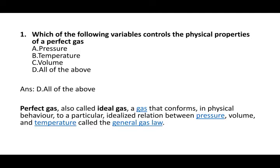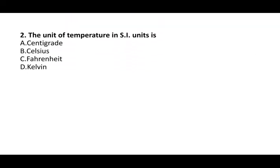A perfect gas is also called an ideal gas — a gas that conforms in physical behavior to a particular idealized relation between pressure, volume, and temperature, called the general gas law. Next question: the unit of temperature in SI units is Kelvin.